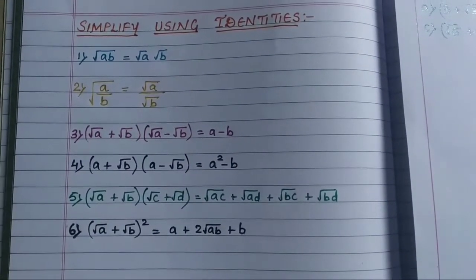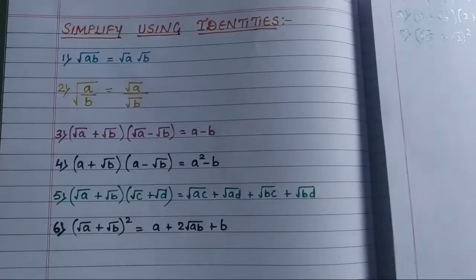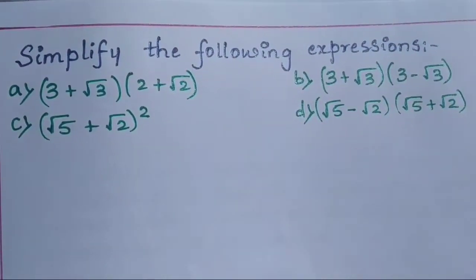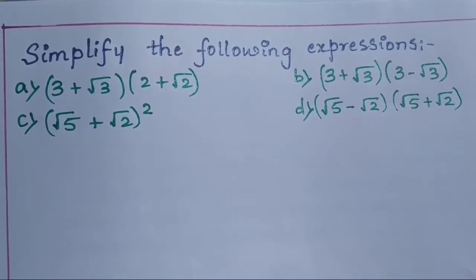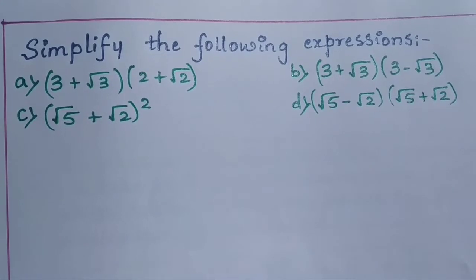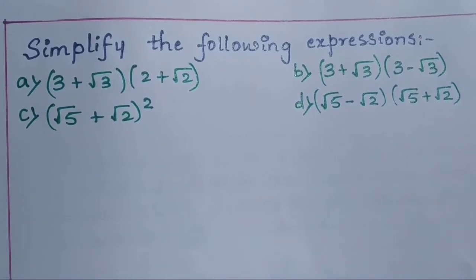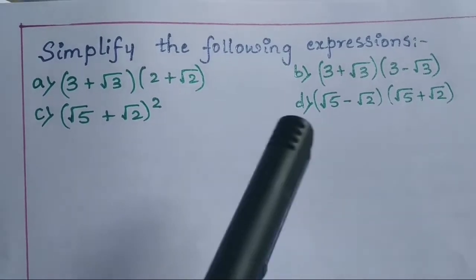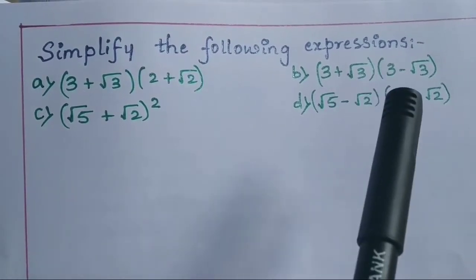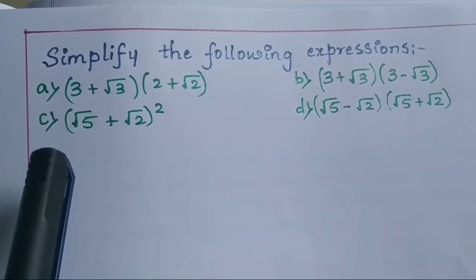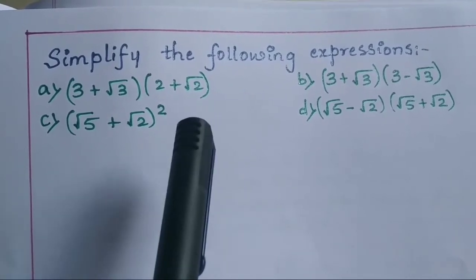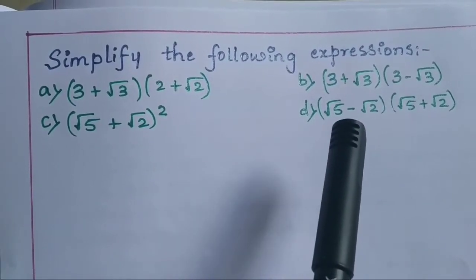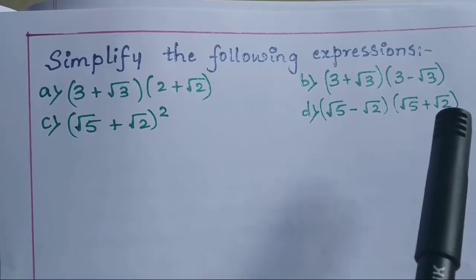So depending on all these identities, let's solve some problems. Simplify the following expressions: the first is (3 + √3)(2 + √2); the second is (3 + √3)(3 − √3); the third is (√5 + √2) whole square; and the fourth is (√5 − 2)(√5 + 2).